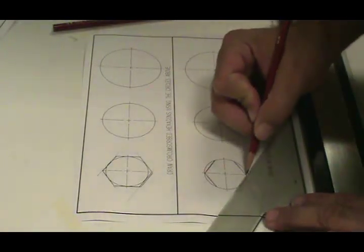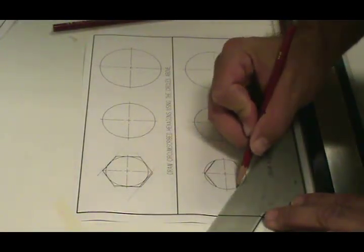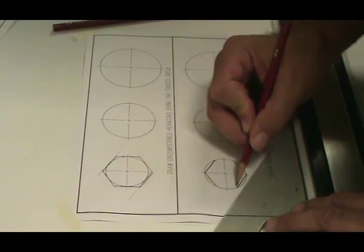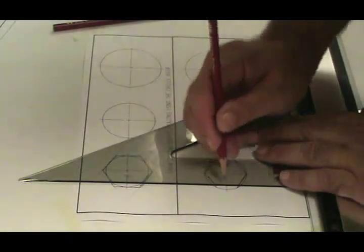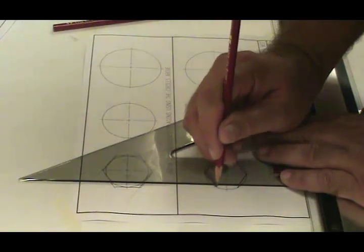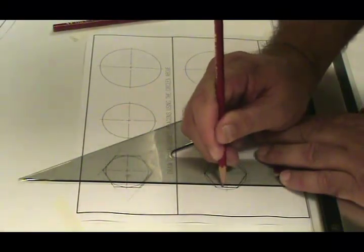And then the intersection of the center line and the circle at the bottom. I'm just drawing a line until it touches the side of the circle. And then where those two points hit the circle I should be able to connect with a vertical line.